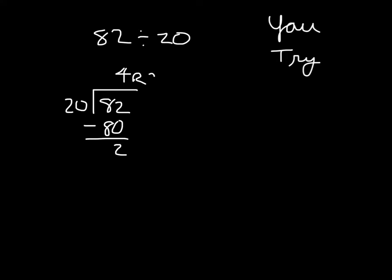For our check, we would take 4, multiply it by 20. 4 times 2 is 8, and we're talking about 8 tens, so that is 80, plus 2, which is 82, where it matches. So it checks.